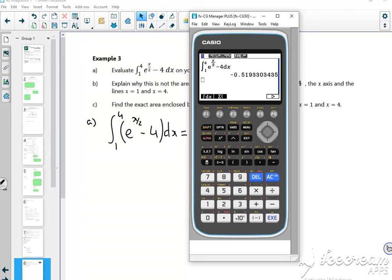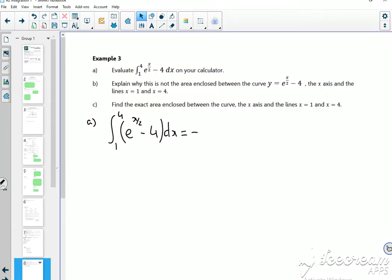And that gives me minus 0.519. So part B says explain why it's wrong if I want the area between 1 and 4.